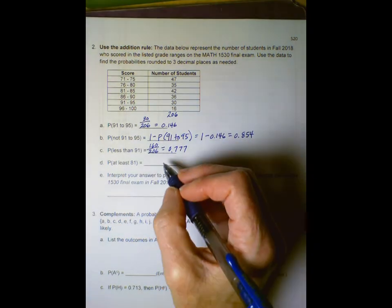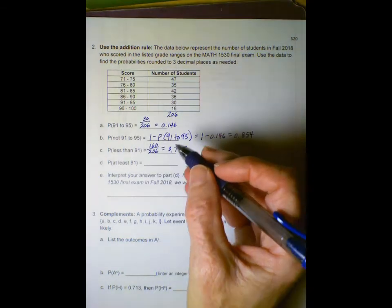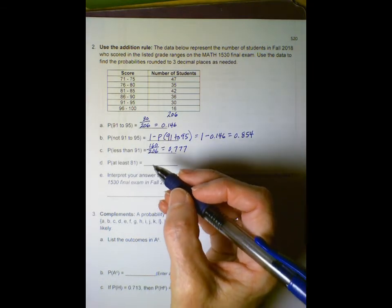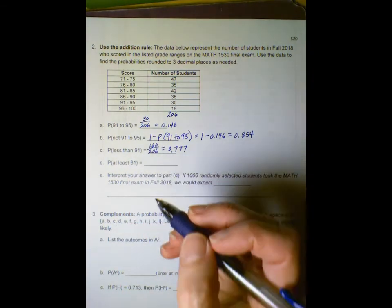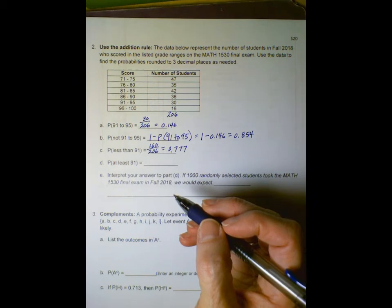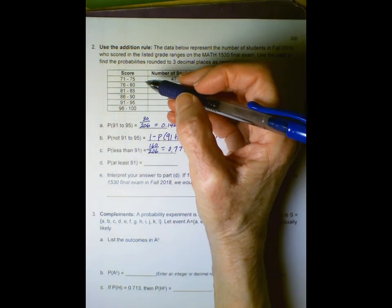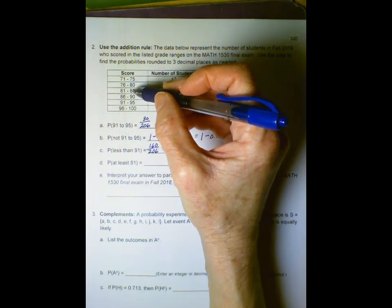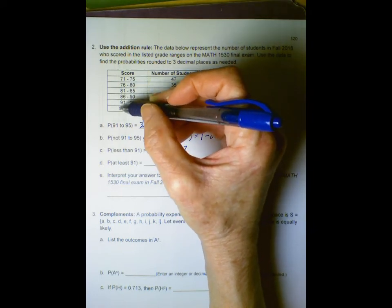Finally, in part d, find the probability that a student in this group of 206 students scored at least 81. At least 81 means we want 81 to 85, 86 to 90, 91 to 95, and 96 to 100.